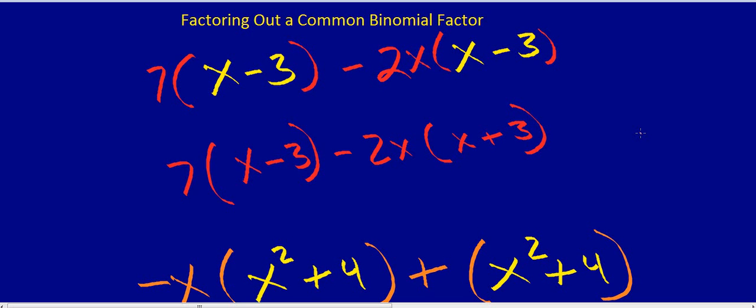In other words, you can take it out like you can any other number. So let's look at some examples. Here, our greatest common factor is a binomial. It happens to be x minus 3, which is what's in yellow. And here it's x minus 3.